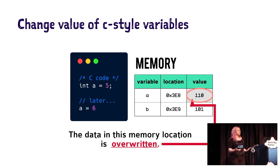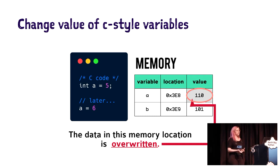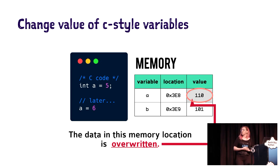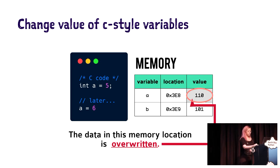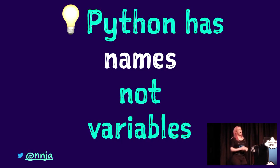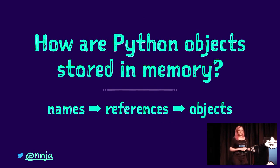It's a one-to-one mapping: a variable name to a memory location and a stored value. 101 is copied over to each memory location when we declare int equals 5. That's why you need to declare the type — so the compiler knows how big to make the bucket. These buckets can only hold same-sized data, or an overflow error might occur. When we change the value of a C-style variable, the data in that memory location gets overwritten. Python, however, has names — not variables.